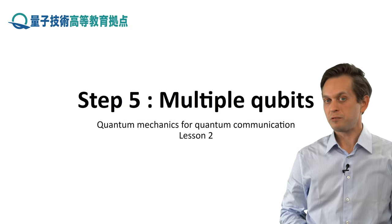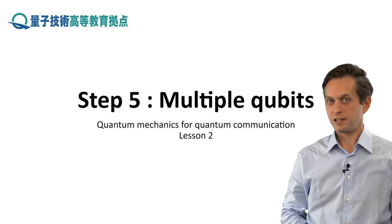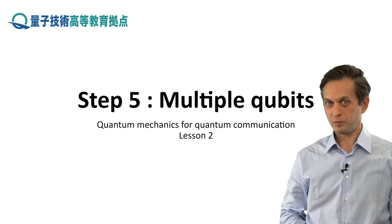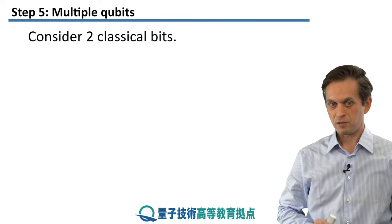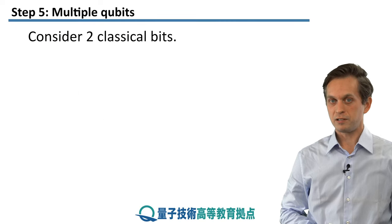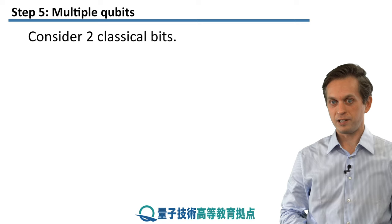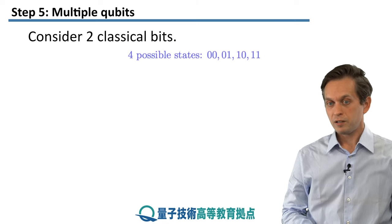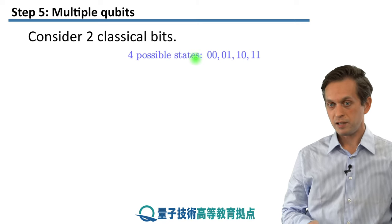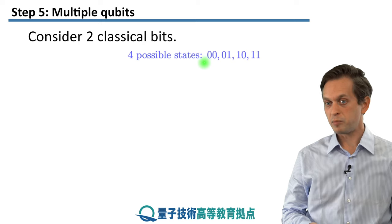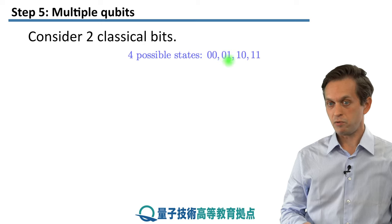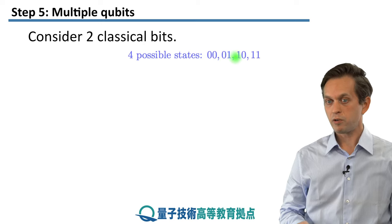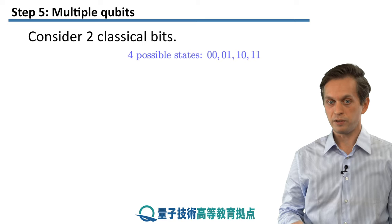Let's consider how we write down the states of multiple qubits. Starting with a simple question: how do we write down the state of two bits? If we have two bits, they can be in four different states: 00, 01, 10, or 11.